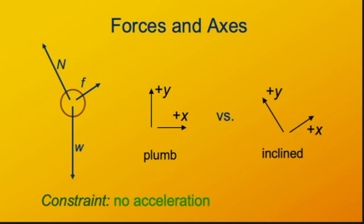In inclined coordinates, our axes are parallel and perpendicular not to the force of gravity, but parallel and perpendicular to the incline. The specific directions you use are totally arbitrary. Here I'm going to make the positive x direction uphill, parallel to the surface, and the positive y direction perpendicular to the surface, pointing up. The reason to do this is that now the normal force and friction are each parallel to one of the axes, and only the weight has components in both x and y. If we used plum coordinates, we'd have to find x and y components of both the normal force and the friction force — I'll leave that as an exercise.